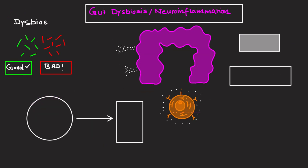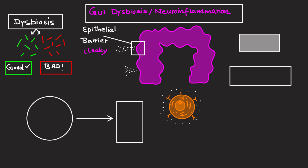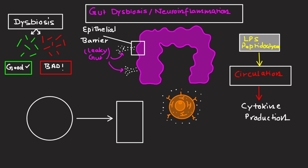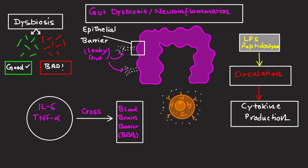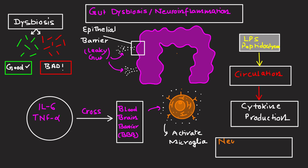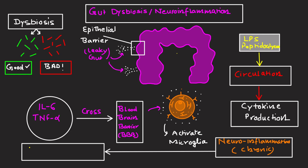Gut dysbiosis and neuroinflammation. Dysbiosis disrupts epithelial barrier integrity — also known as leaky gut — allowing lipopolysaccharides (LPS) and peptidoglycan fragments to enter systemic circulation. This triggers pro-inflammatory cytokines, including IL-6 and TNF-alpha, that cross the blood-brain barrier, activating microglia and contributing to neuroinflammation. Chronic low-grade inflammation has been linked to depression, Alzheimer's, and cognitive decline.